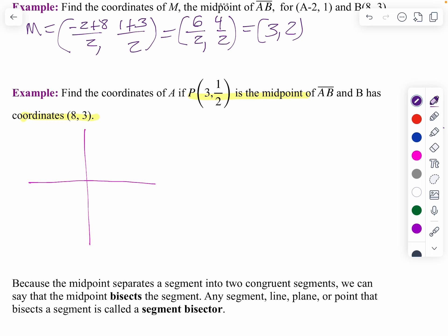And I know my midpoint, P, is... Now notice I didn't have a graph, so I'm going to estimate here. So I'm going to go over 3 and up 1 half. Here is my midpoint. I know one endpoint is over 8 and up 3. So I know my other endpoint is someplace here. And obviously I'm not drawn to scale.